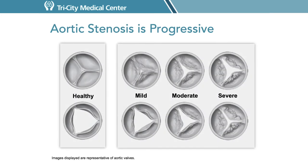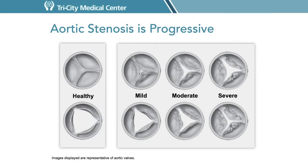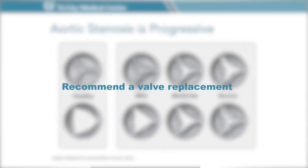Aortic stenosis is a slowly progressive condition. Early on, most patients don't have any symptoms. It is classified as mild, moderate, or severe. The American College of Cardiology and the American Heart Association recommend that people with mild aortic stenosis get an echocardiogram every three to five years, and those with moderate aortic stenosis get an echocardiogram every one to two years. Many patients will eventually progress to severe, which is often when symptoms begin to develop. At that point, medical guidelines recommend treatment with a valve replacement.